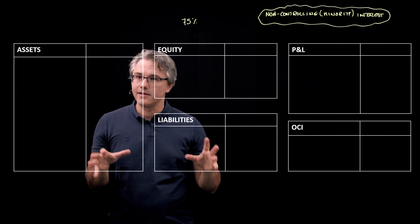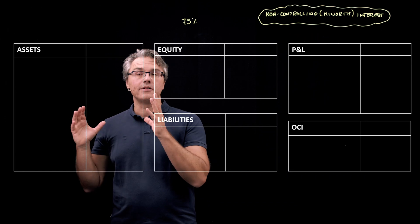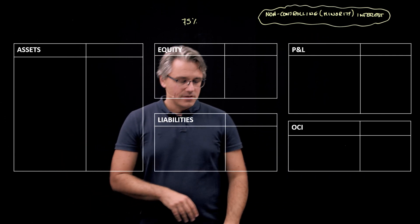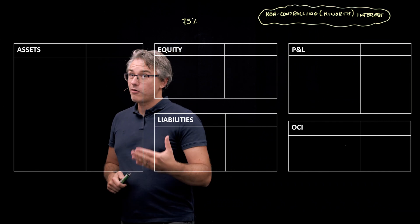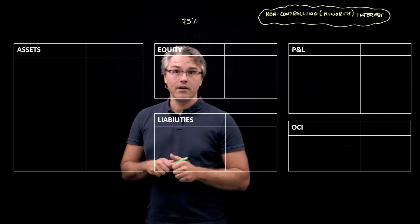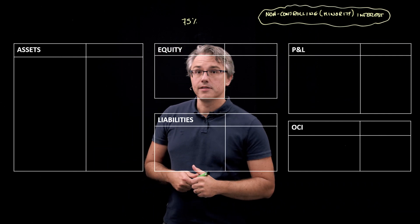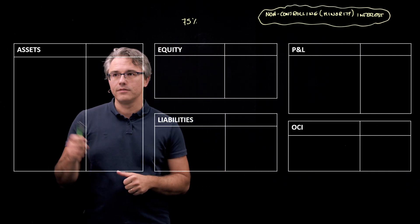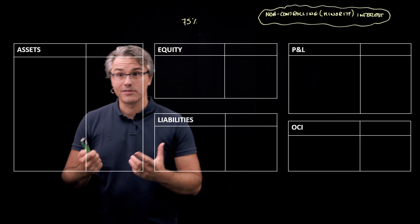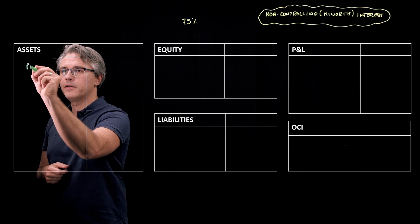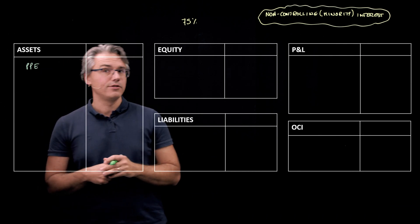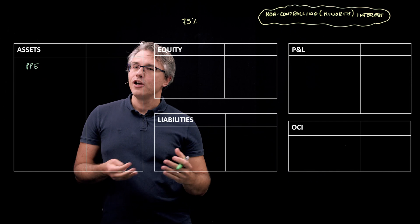When we consolidate, we consolidate in full. So, irrespective of this 75% share ownership, when I bring my freshly acquired subsidiary's assets into the asset side of my consolidated balance sheet, starting with property, plant, and equipment, I'm going to do this in full.